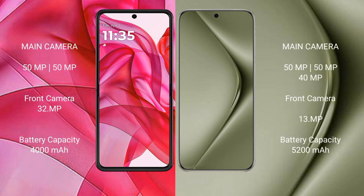The Motorola RAZR 50 Ultra has a rear dual camera setup with a 50MP main camera and 32MP front camera. The Huawei Pura 70 Ultra features a rear triple camera setup with 50MP, 50MP, and 40MP lenses, along with a 13MP front camera.